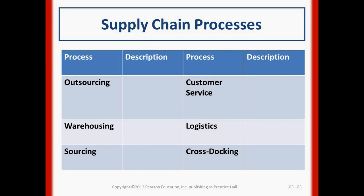When talking about supply chain processes, you can have outsourcing, where a process is completely outsourced to an outside provider. You can have warehousing, where a product is brought into a facility, sorted, received, processed, and sent to the final customer. There is also sourcing, which involves getting inbound products such as raw materials.